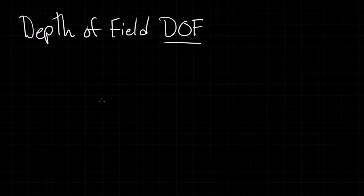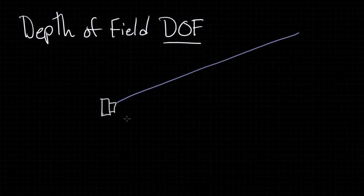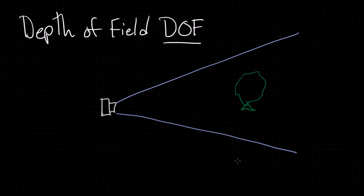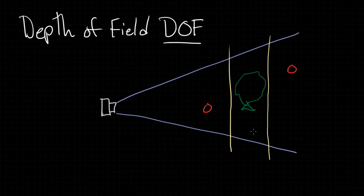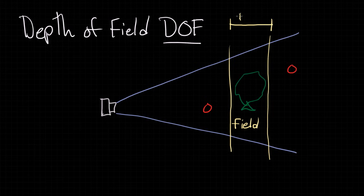Let's see what it means. Say we have our camera and our lens, and we have this area that the camera can see. In that area, we might have a tree and some apples, and what we're actually going to photograph is the tree. That means this area containing the tree — this distance from the camera to this distance — is the area we want to be in focus. This area is called the field. What we're interested in is the depth of this field — that's what we mean when we say depth of field.